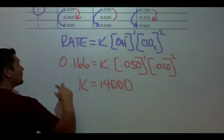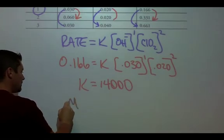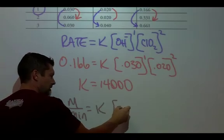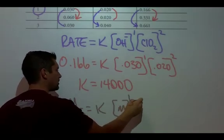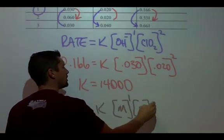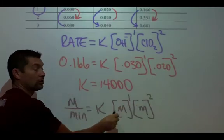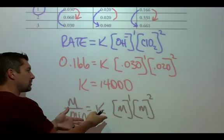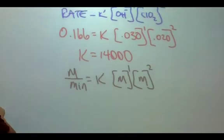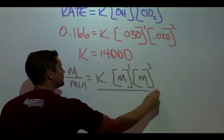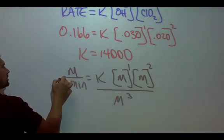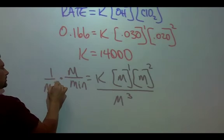The rate units were molarity per minute. This means molarity to the first. This is molarity to the second. The overall order is to the third order, and I'm going to solve mathematically for K. If I was going to solve mathematically for K, I would divide by M cubed, which means I divide by M cubed.